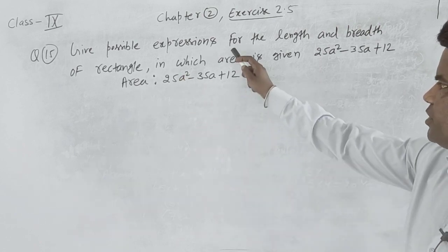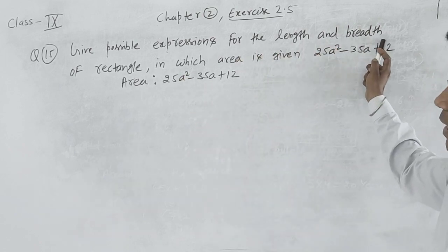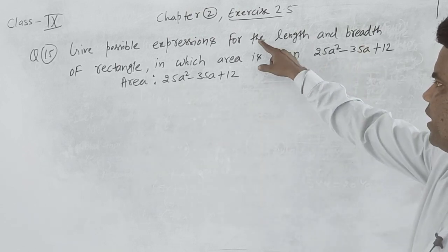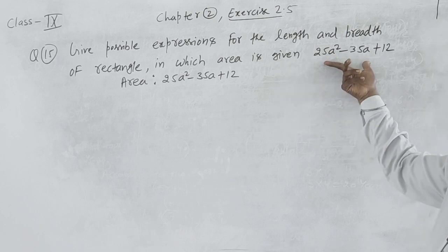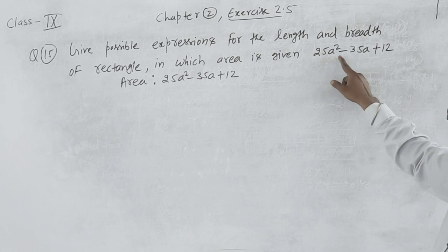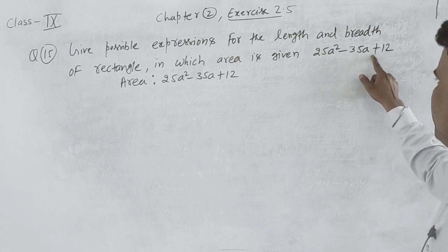Give possible expressions for the length and breadth of rectangle in which area is given. The area is given, the equation or formula in polynomial form is given: 25a square minus 35a plus 12.